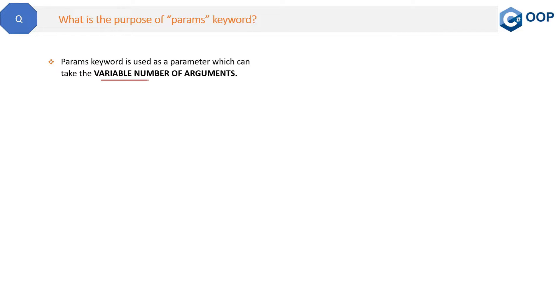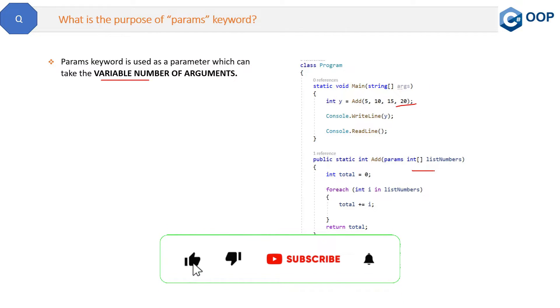Now let's see a code example. Here you can see inside the main method we are calling this add method where we are passing multiple parameters. And in the definition of this add method, we are receiving those parameters value in an array by using this params keyword. And then by using this foreach loop we are iterating those parameters received one by one. So that is the purpose of params keyword.